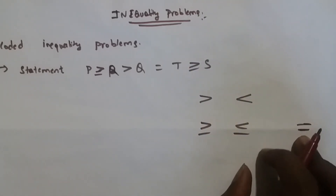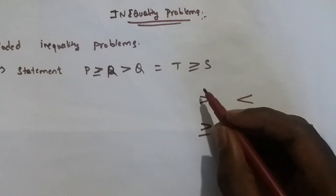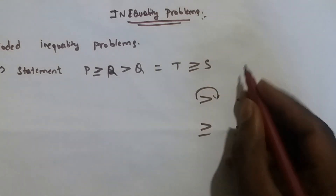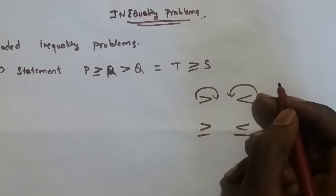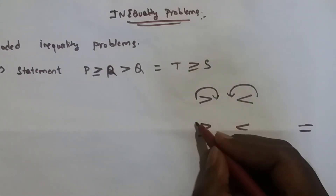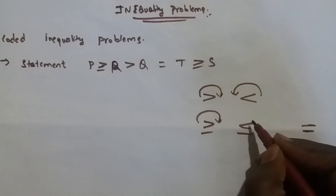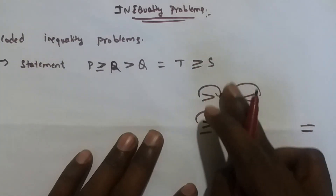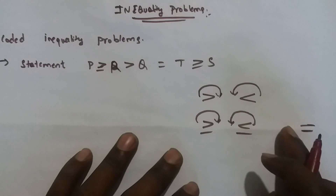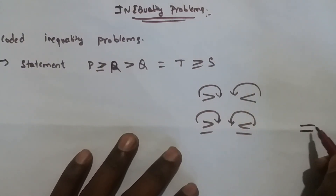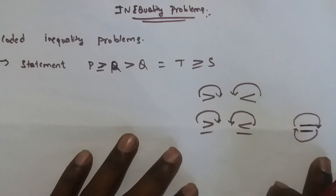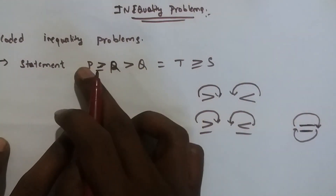See here — from greater than or equal to, it moves from left to right. Again it moves from right to left, open to close, open to close. From here also it moves from open to close, and here close to open it moves from right to left and left to right. These are the formulas.